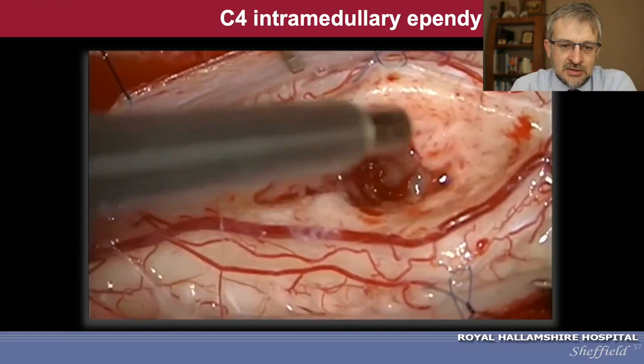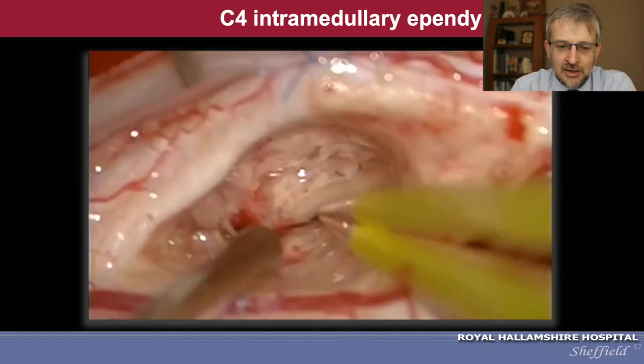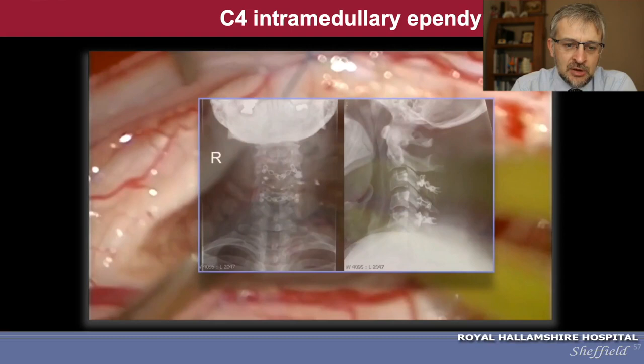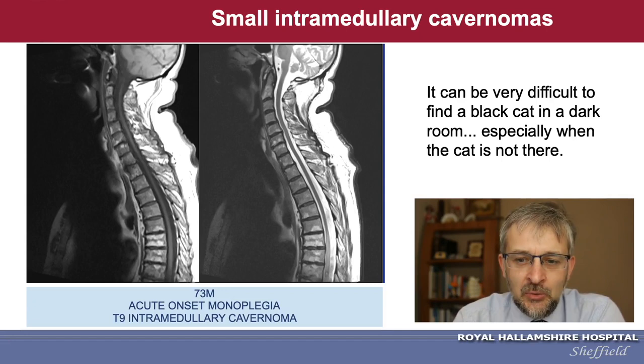Ultrasound is extremely helpful here: you debulk the tumor with the CUSA, then dissect it away from the spinal cord with bipolar to avoid unnecessary manipulation. After some debulking and piecemeal removal you can achieve gross total removal, hopefully without causing any new harm. It is even more important to locate a very small lesion accurately — it can be very difficult and extremely frustrating to search for a black cat in a dark room, especially when that cat is not there.